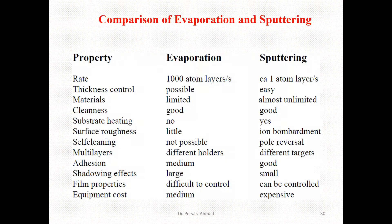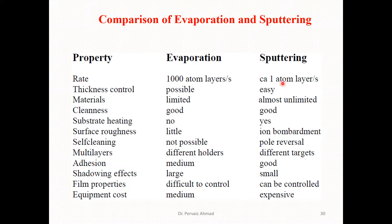Here you can see that we have put the properties on the left-hand side. In the middle we have the evaporation technique properties, and on the right-hand side we have the parameters utilized in the sputtering technique. Starting with the rate: the rate in the evaporation technique is very high, that is one thousand atomic layers per second, whereas in sputtering it is almost one atomic layer per second.